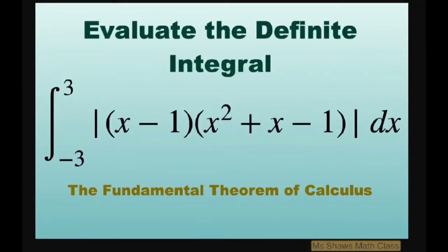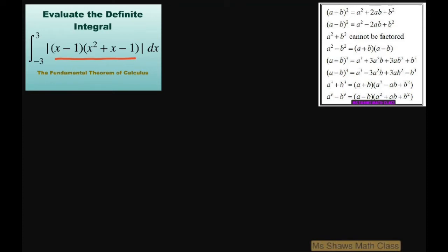Hi everyone. We're going to evaluate the definite integral from negative three to three of absolute value of x minus one times x squared plus x minus one dx. What we're going to do is first look at condensing this. This is just your difference of cubes expanded, so I'm going to condense it and write it as the integral from negative three to three of absolute value of x cubed minus one dx.